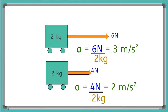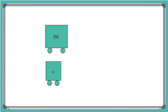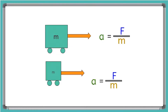But what about carts with different masses? Now I'm going to have two carts with different masses and pull them with the same force. What do you think will be different about the accelerations? Using acceleration equals force over mass, if they have the same force pulling on them, the heavier cart will accelerate slower than the lighter cart.